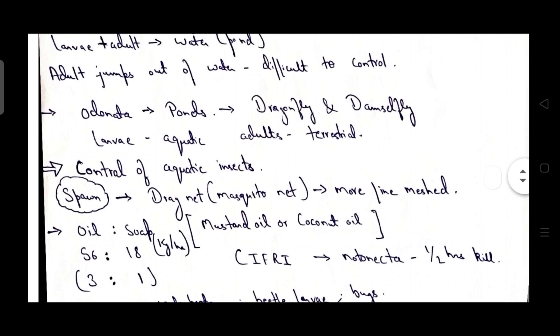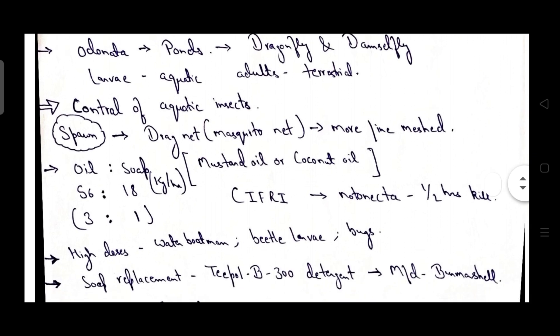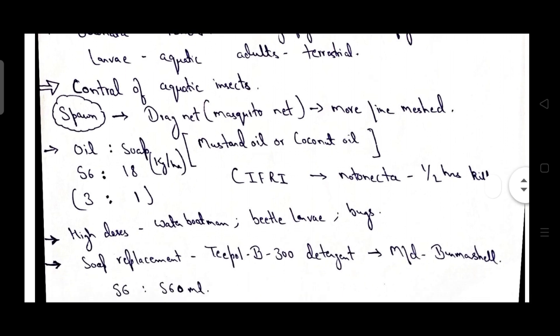Now coming to control of aquatic insects. First of all, we focus on nursery ponds as these aquatic insects are harmful for your spawn as well as fry. We use dragnet by having reduced mesh size. Mesh size should be reduced to catch these aquatic insects.